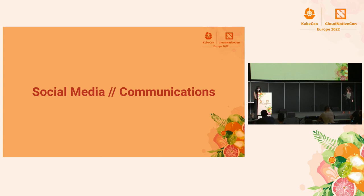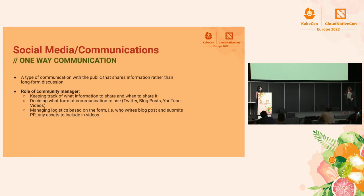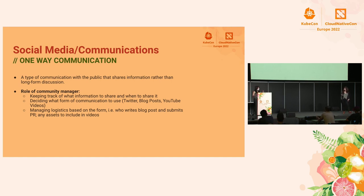Next, let's talk about social media and communications. Communication with your community can happen in a few ways — we're breaking it down into one-way communication versus two-way communication, and also official public relations. One-way communication is often used for making announcements, and community managers can work with a variety of channels such as Twitter, blog posts, and videos. They're not necessarily always putting out the content themselves, but they facilitate it by working with maintainers to write blog posts, make videos, demos, etc.